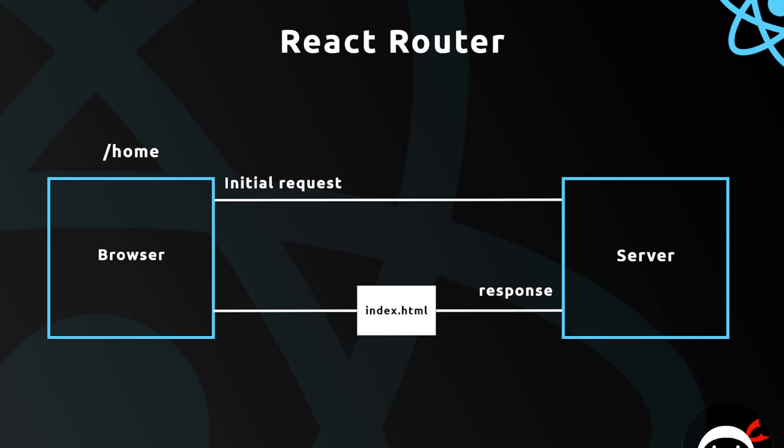So far we've been using React to show only one page to the browser, but most websites have several pages — a home page, an about page, a contact page, etc. So how do we implement different pages in React?